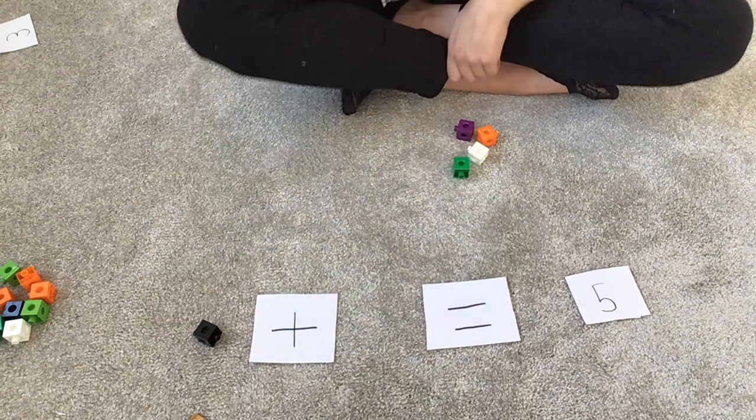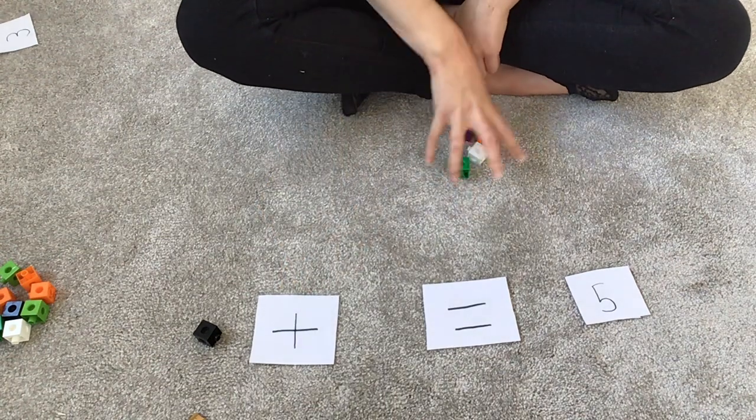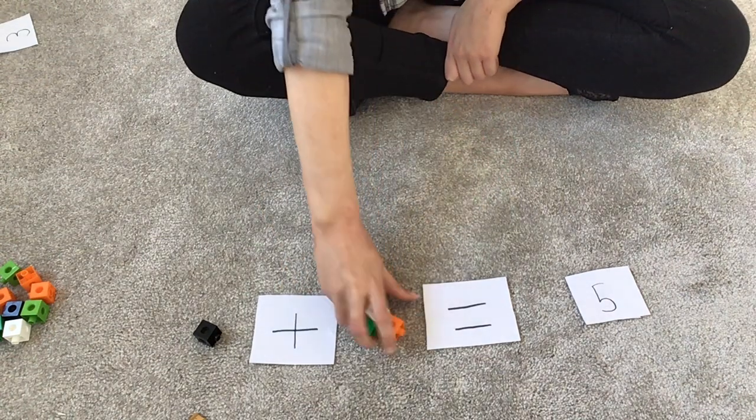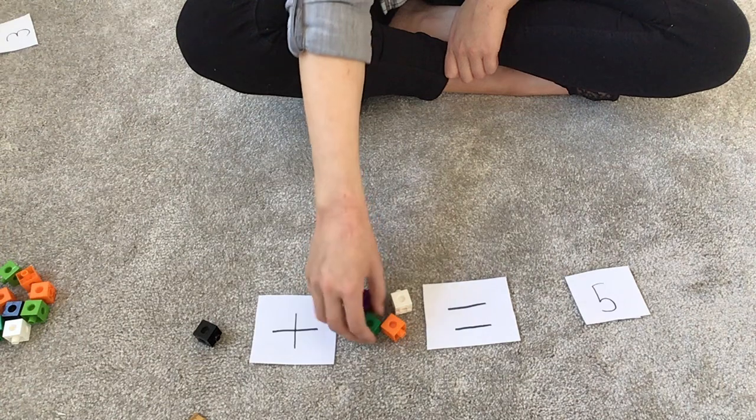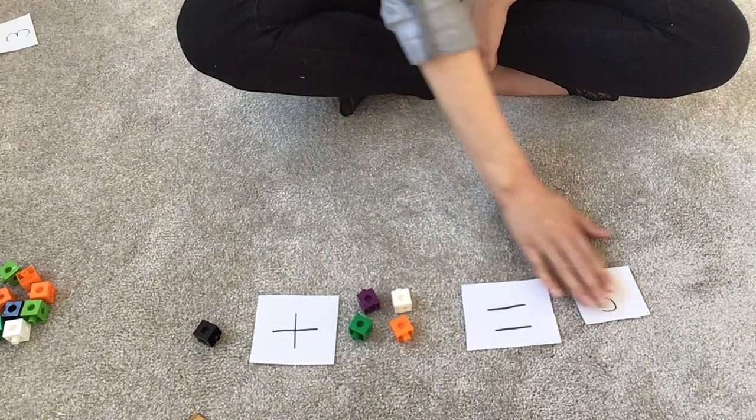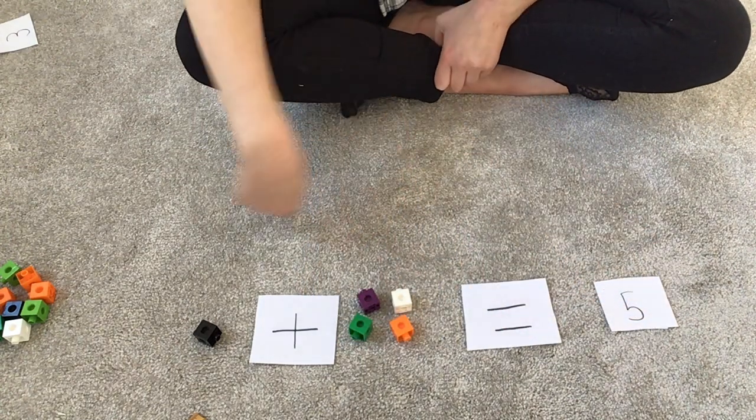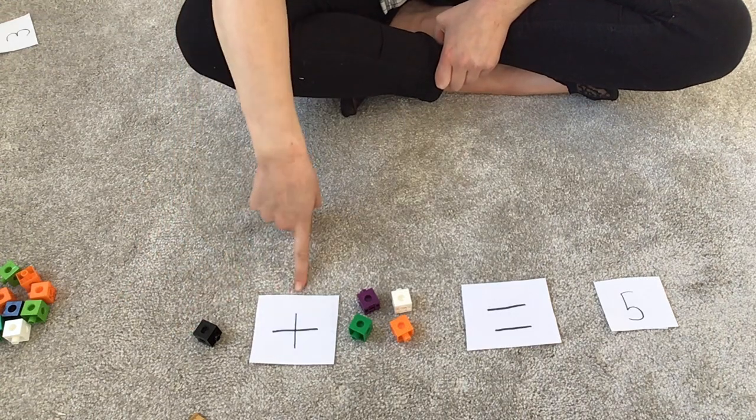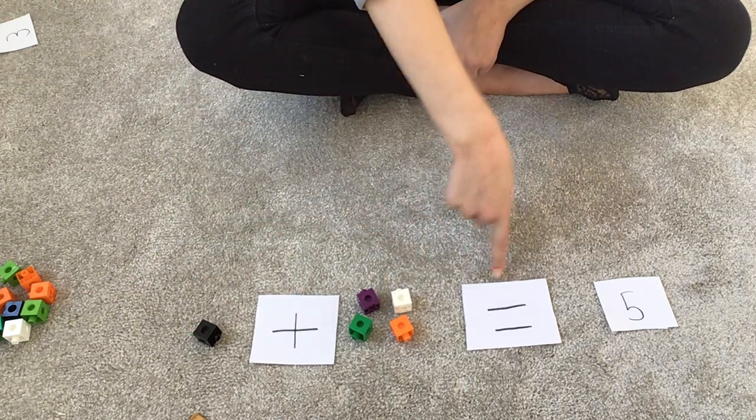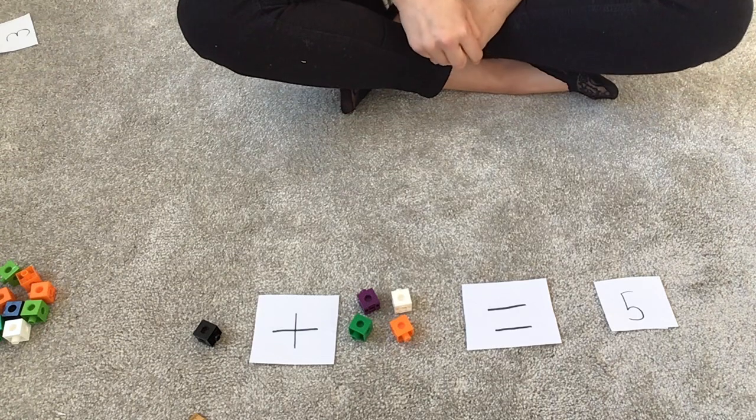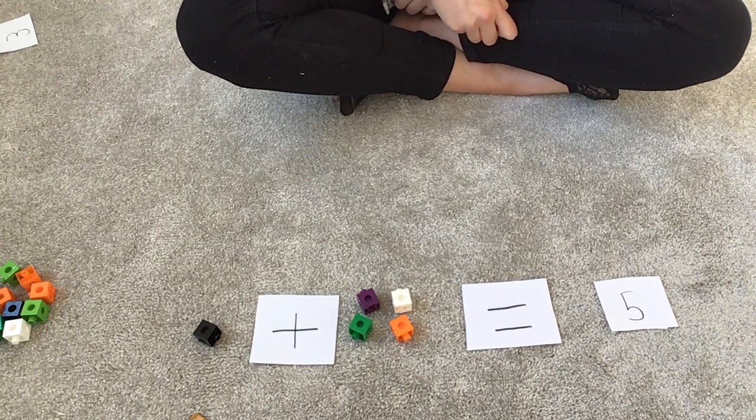It's all about being able to put the cubes in the number sentence, read the number sentence, and then fill it in on your diagram. Our first one, we're going to do one, add the rest of your cubes. Can you count how many cubes are there? Nice and easy, four. So you're going to do one add four equals five. That is your first number bond to five.